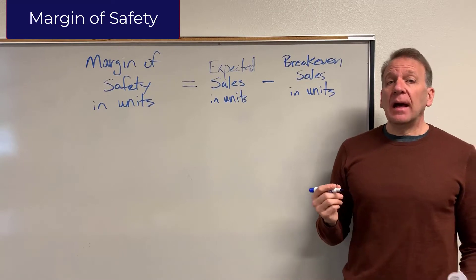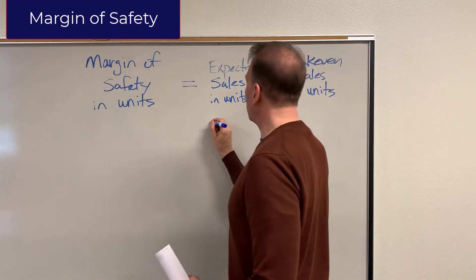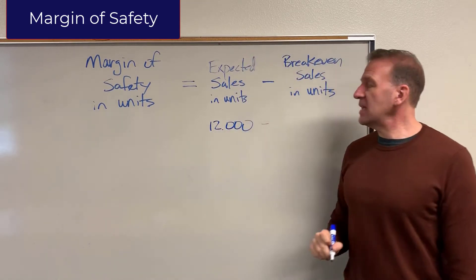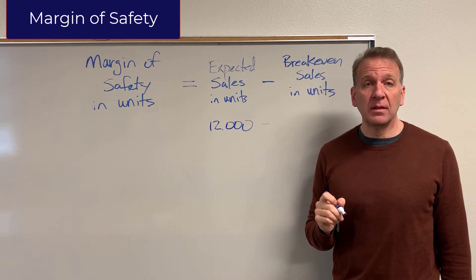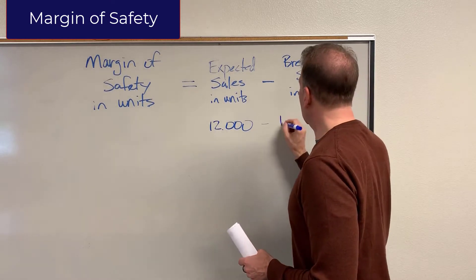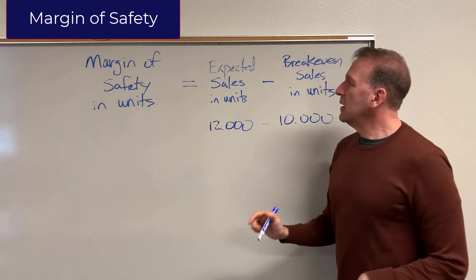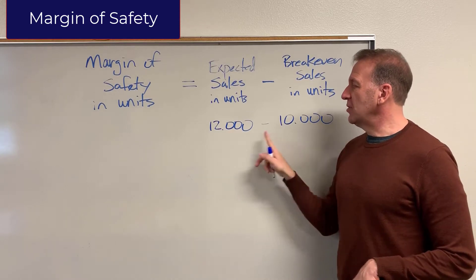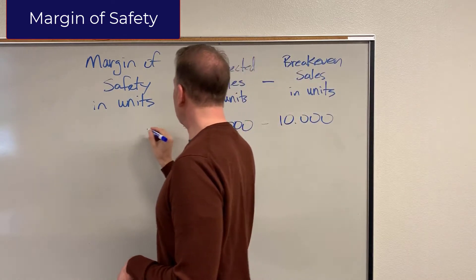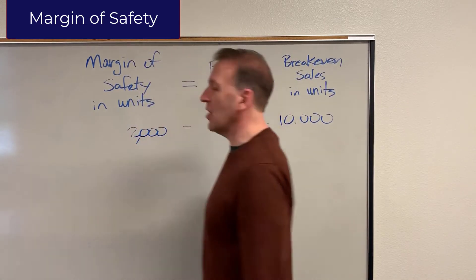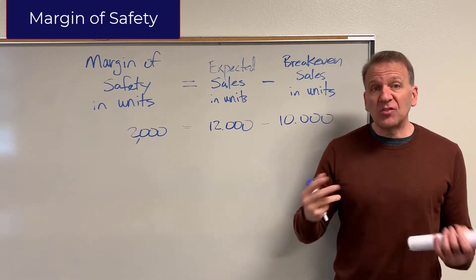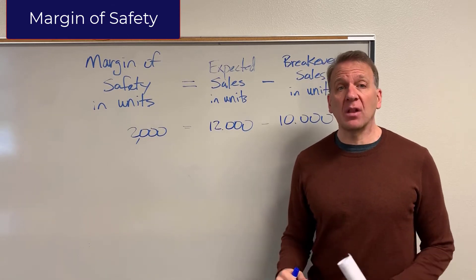Let's assume that our expected sales are 12,000 soccer balls. And let's say previously we calculated our breakeven point where we didn't have any profit or any loss — our breakeven was 10,000. So if we have expected sales of 12,000 and our breakeven is 10,000, then we have a margin of safety of 2,000 soccer balls. Meaning our sales can drop by 2,000 and we'll still be okay — we'll still at least break even.